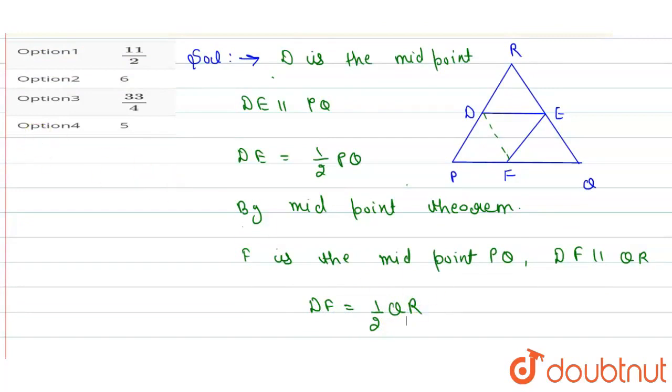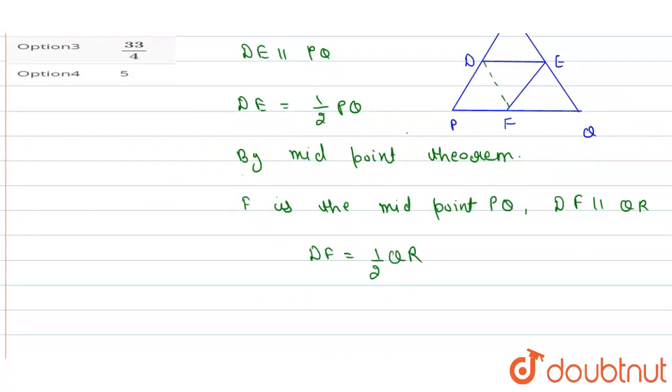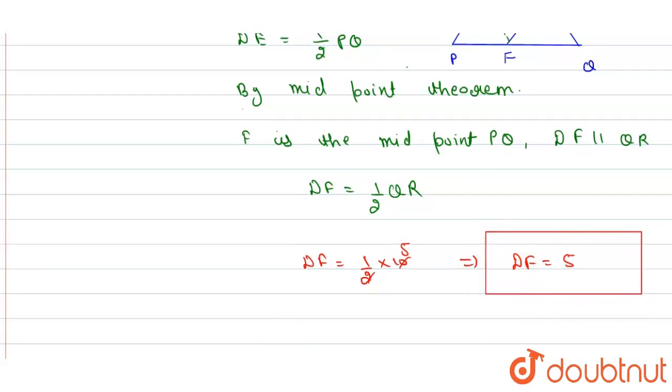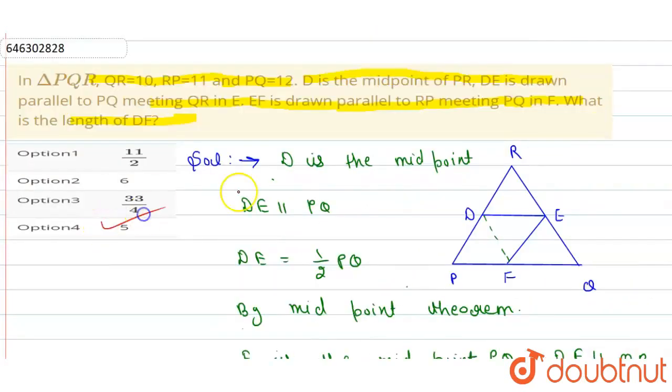DF equals 1 by 2 of QR. QR is given as 10, so DF equals 1 by 2 of 10, which is 5. Therefore, DF equals 5. The correct answer is 5. Thank you.